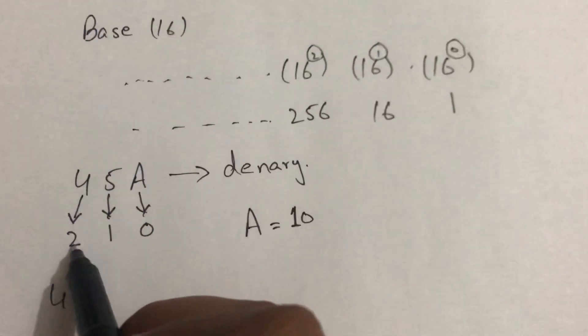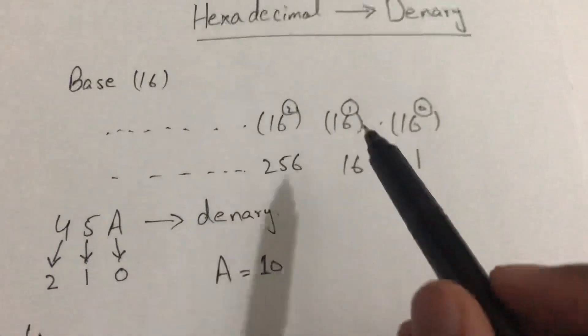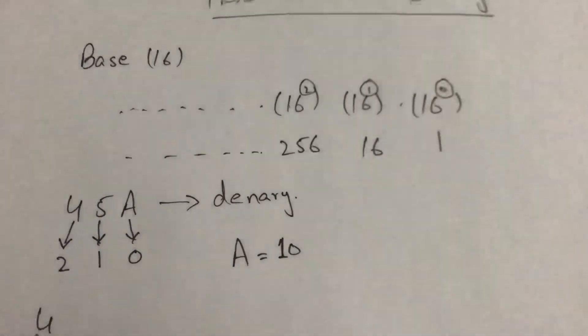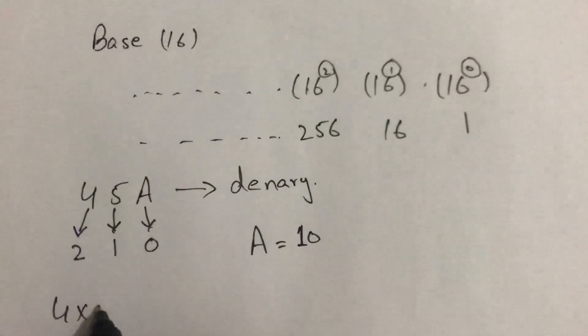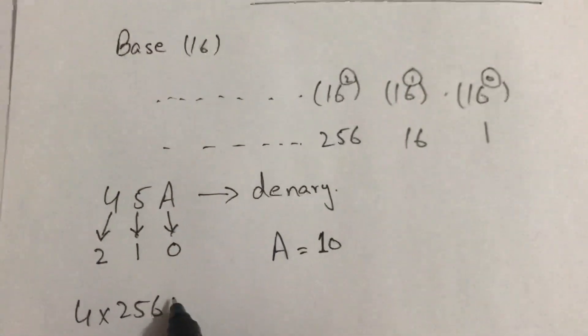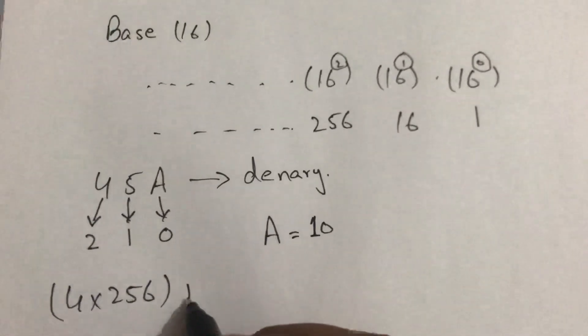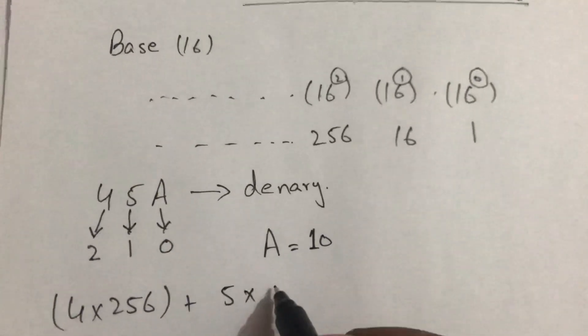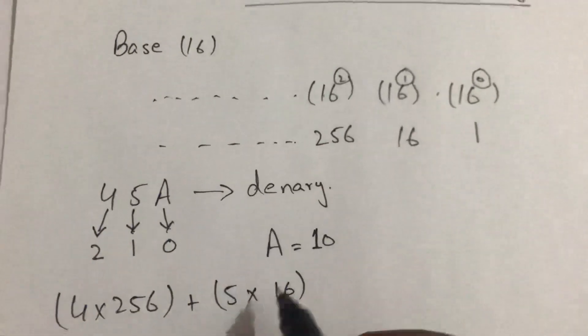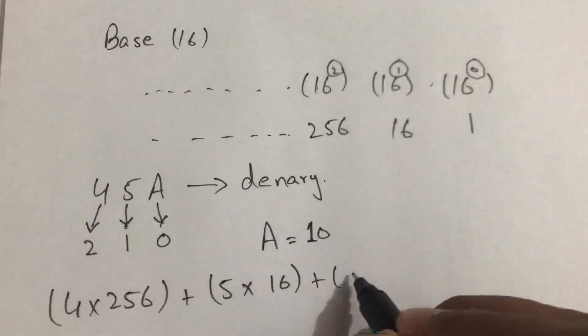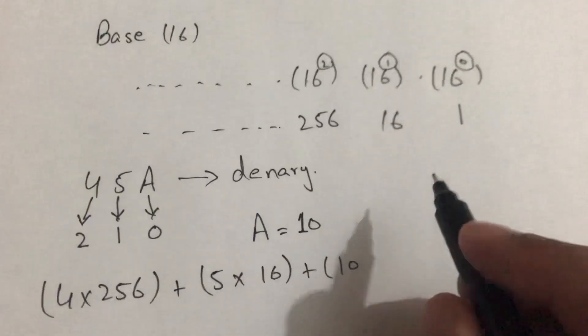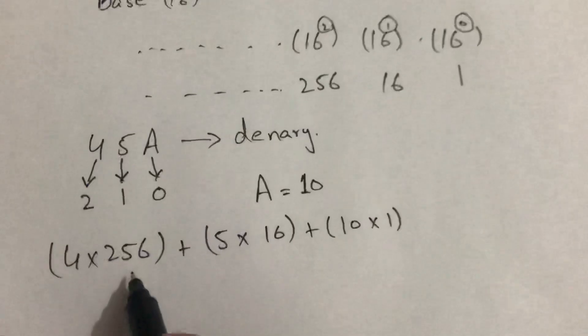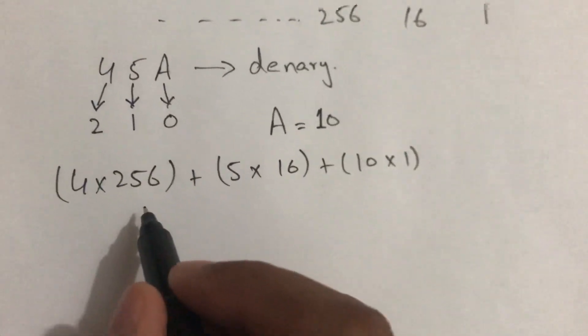4 is placed at 2nd index, so 16 raised to the power 2 is 256. We will multiply 4 into 256, plus 5 will be multiplied by 16, and A equals to 10, so 10 will be multiplied by 1.